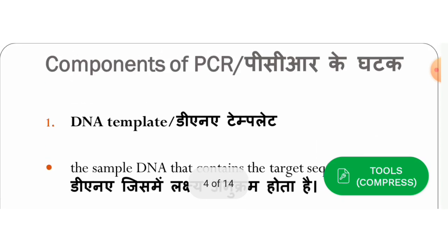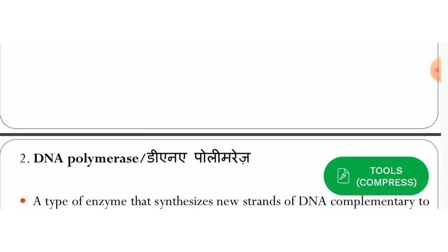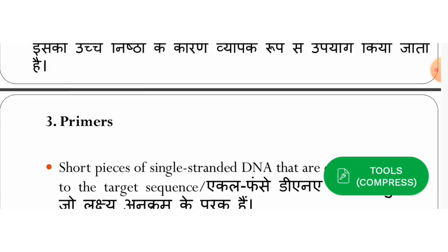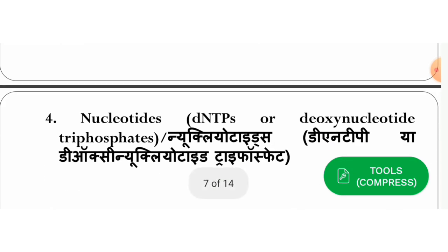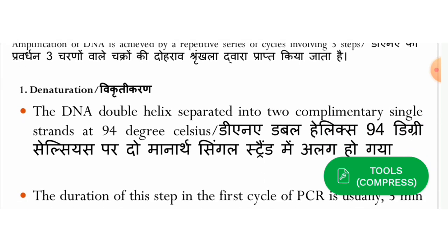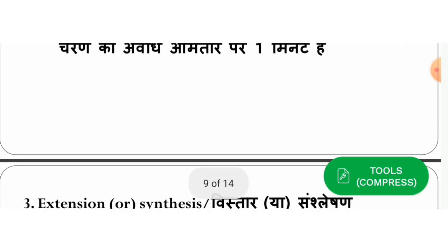To summarize: first is the DNA template containing the target sequence; second is DNA polymerase enzyme which catalyzes the overall reaction; third is the primer; and fourth is the nucleotide (dNTP). The procedure of PCR involves amplification of DNA achieved by a repetitive series of cycles with three steps: denaturation, annealing, and extension.